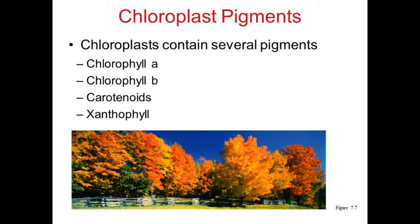Not only chlorophyll, but the chloroplast pigment contains other pigments also, which give different colors. There is chlorophyll A and chlorophyll B. These chlorophylls A and B are found in all higher plants. Then we have carotenoids, which provide different colors in nature.